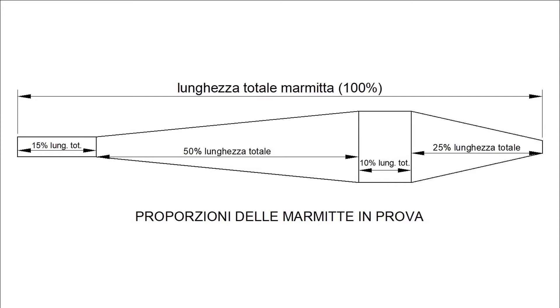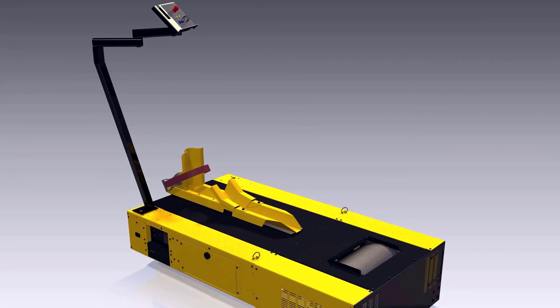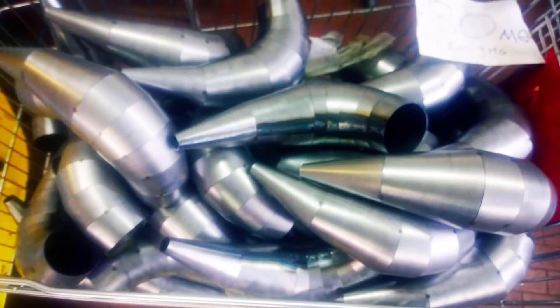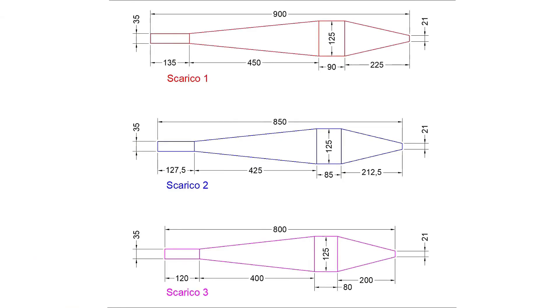In fact, our objective is to observe the variations only relating to the length and only relating to the diameter. After we've seen the theoretical data, let's turn our virtual workbench on. Let's take our virtual mufflers and get on our fantasy motorcycle. By observing the three mufflers that we named exhaust 1, exhaust 2 and exhaust 3, you can see how the length, but not the proportions, change.